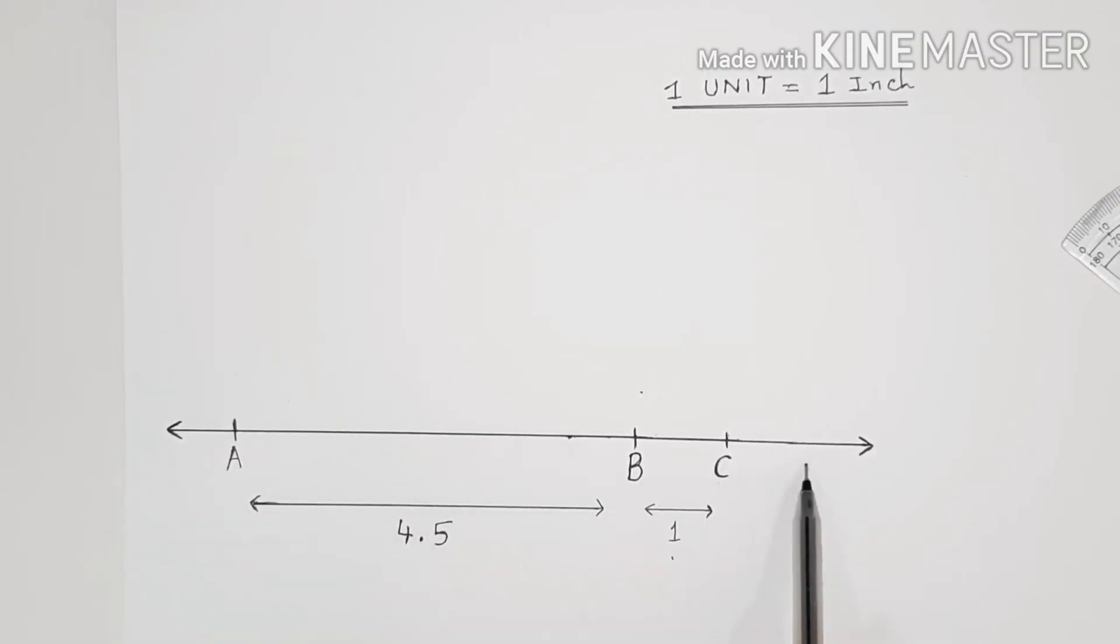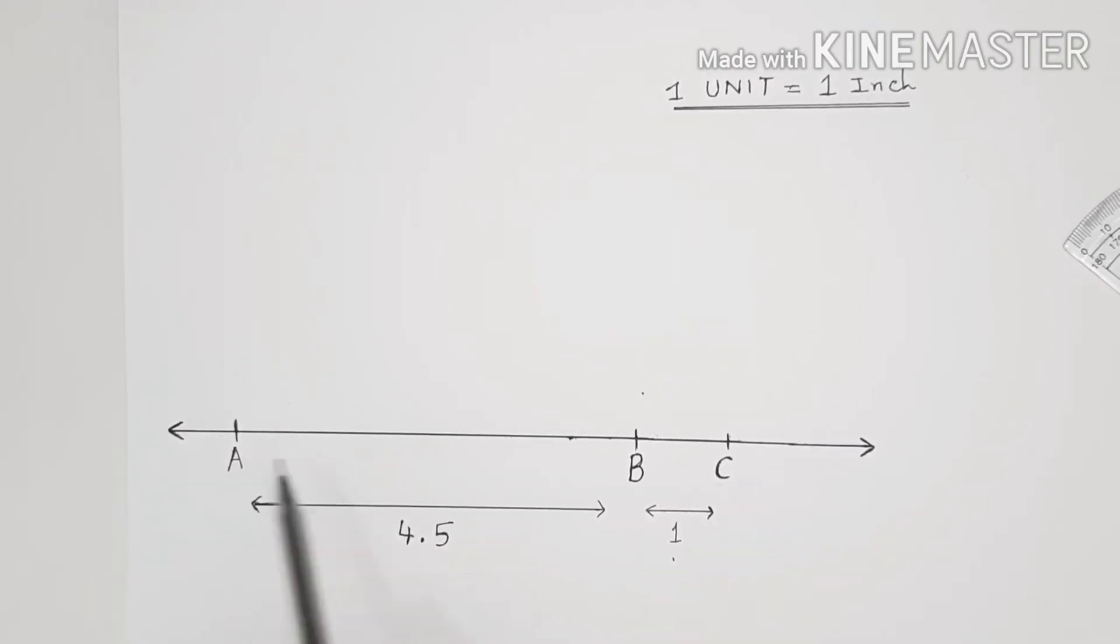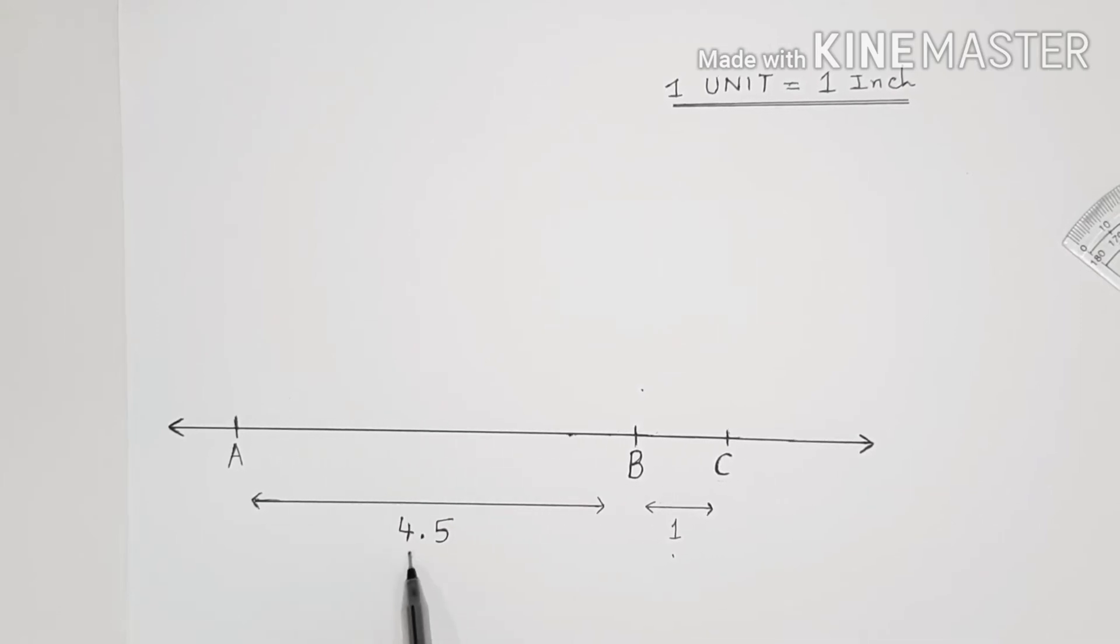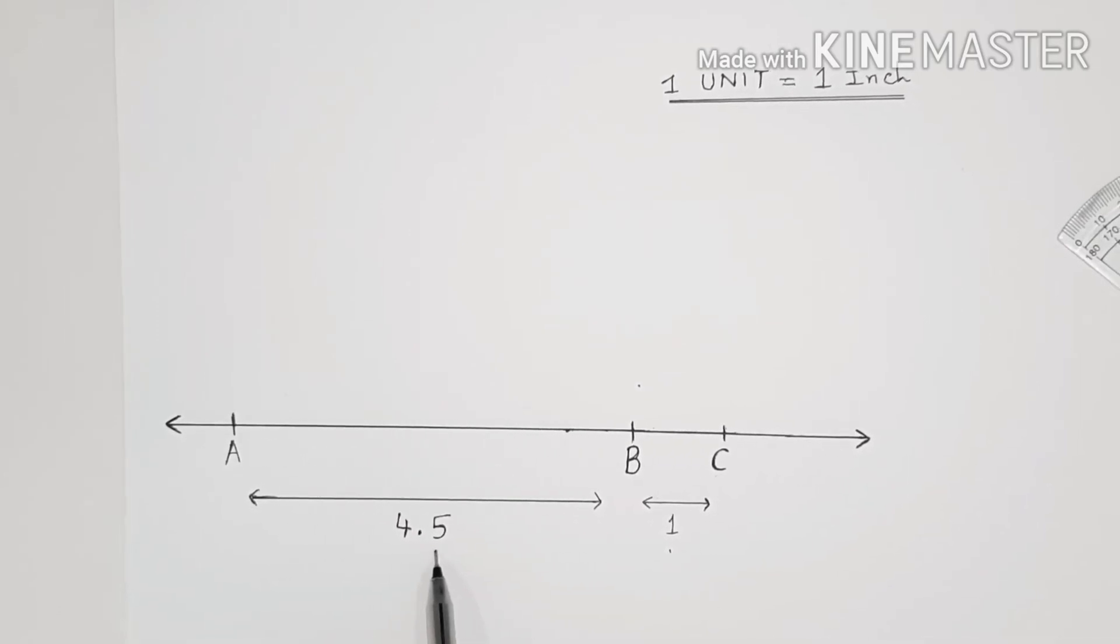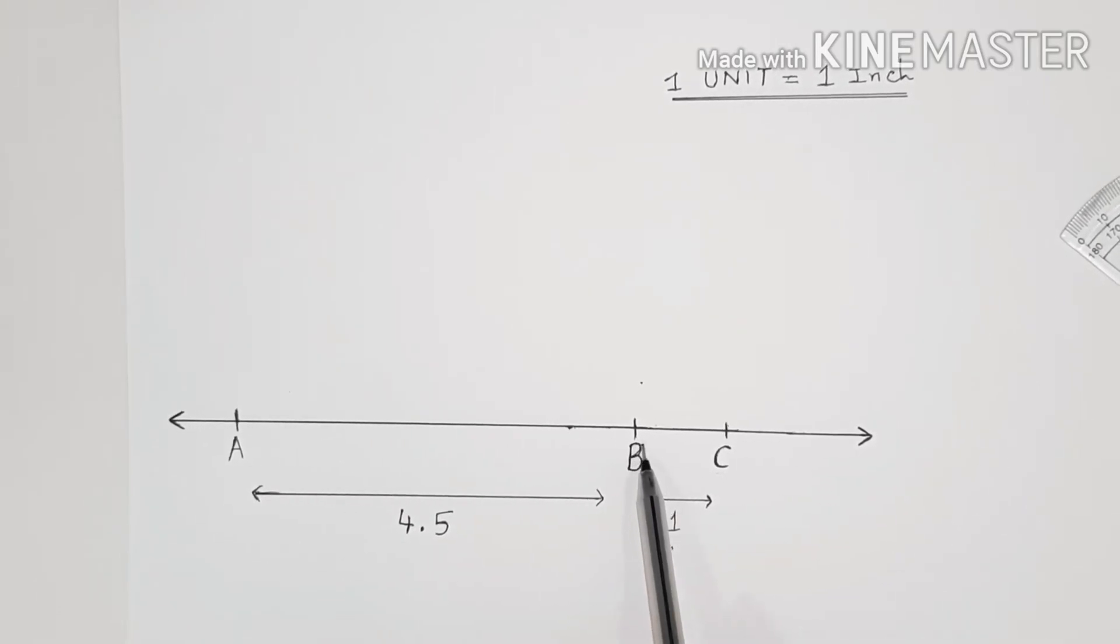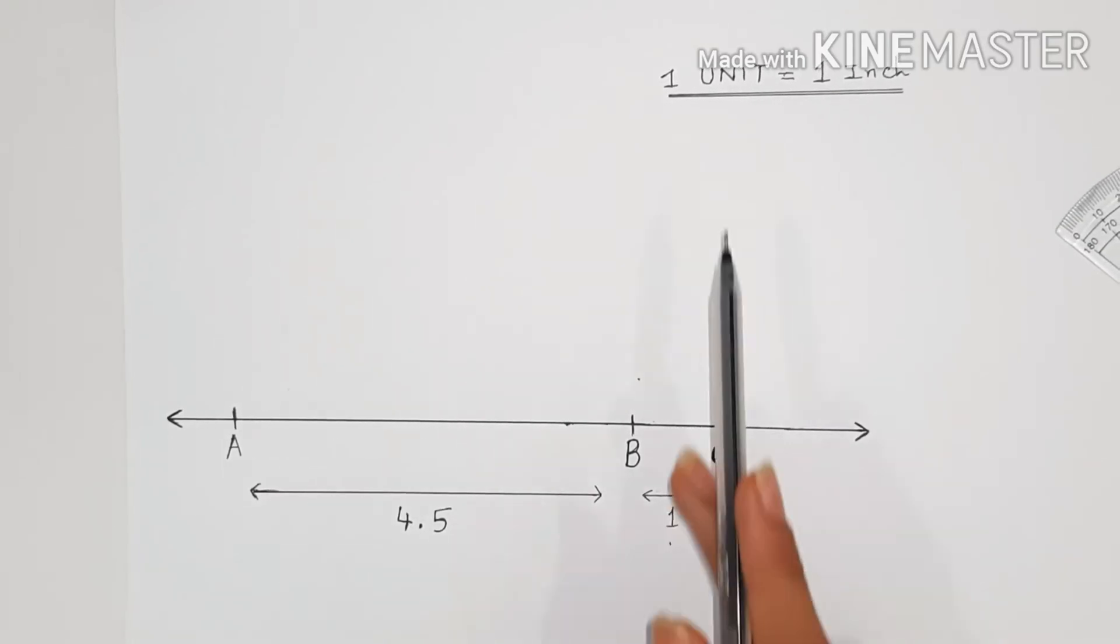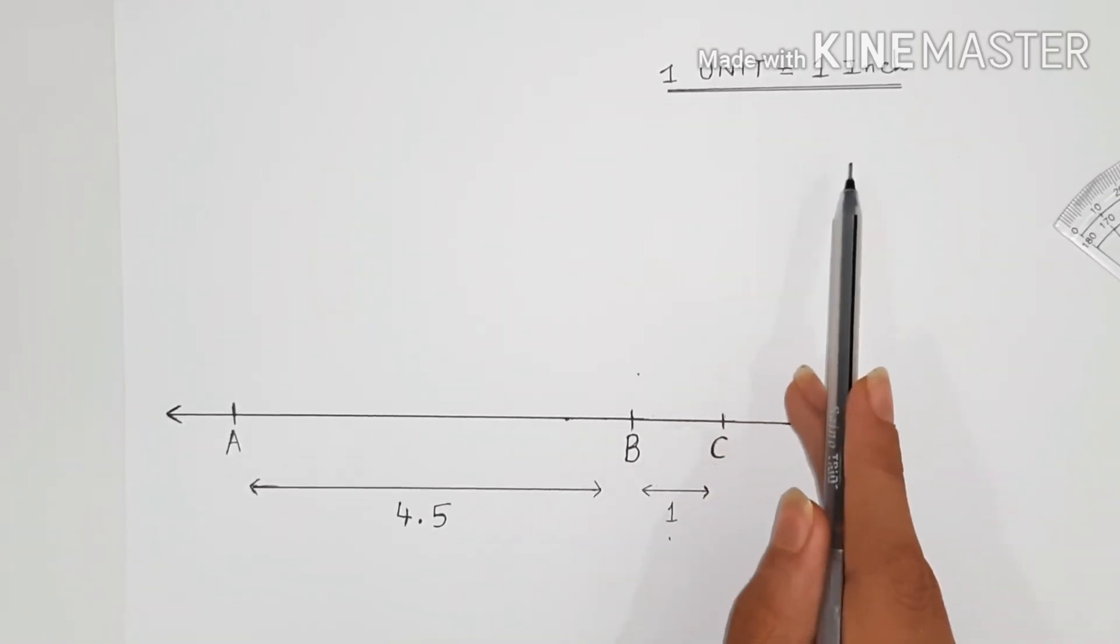To start with, you will draw a number line as shown and mark two points on it, A and B. The distance between them should be 4.5 units. Then you will extend the line from B one unit more and mark a point C.